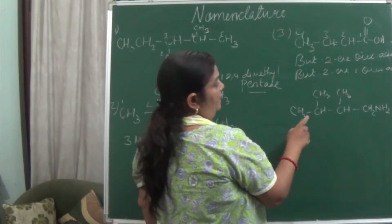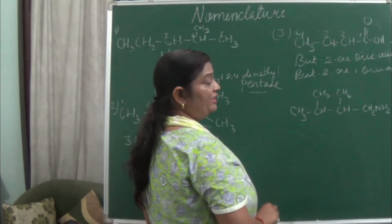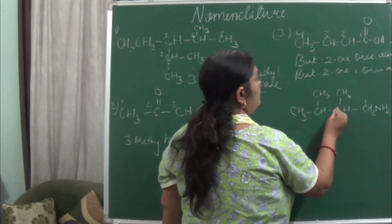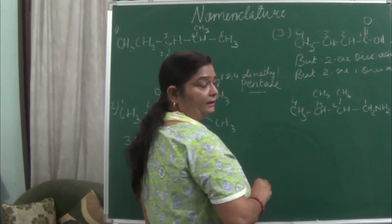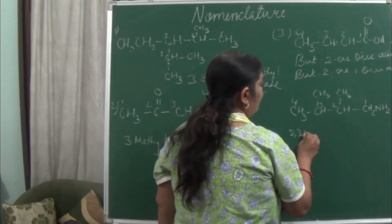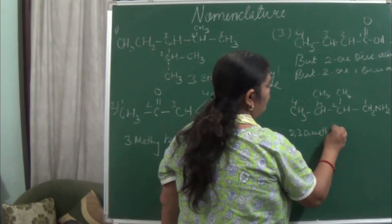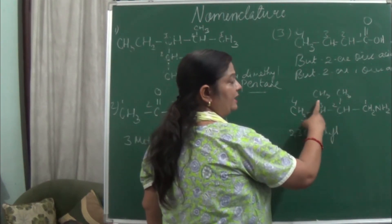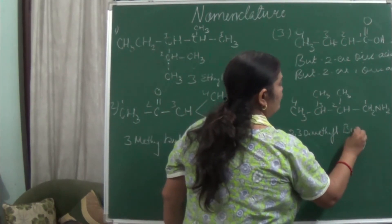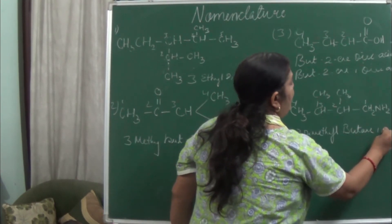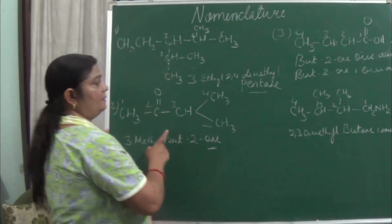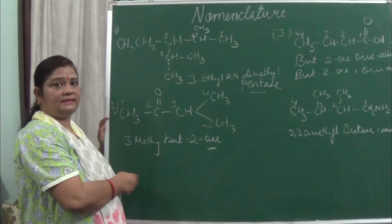Next example: an amino group is present. Since functional group is here, priority is given to it and counting starts from this side: 1, 2, 3, 4. In the 2nd and 3rd positions, methyl groups are present. So we write 2,3-dimethyl, and the parent chain is butane. With the amino group at position 1, it becomes 2,3-dimethylbutan-1-amine, or but-1-amine. These are the four examples — it should be clear now.